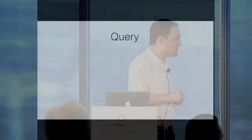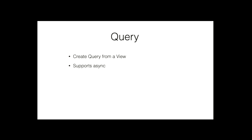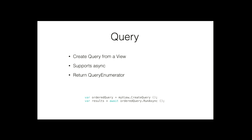You call CreateQuery on the view, and once you have that query, you run it or run it async. You get a QueryEnumerator back — you can enumerate the results and pull out all the documents, then get all the properties in every document. There are also properties you can set on queries: ordering, limit on the number of documents returned, and so on.